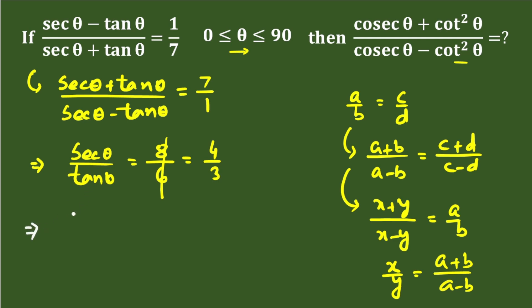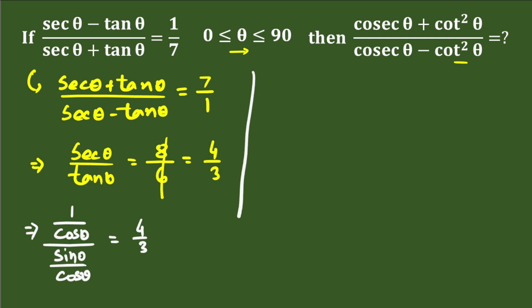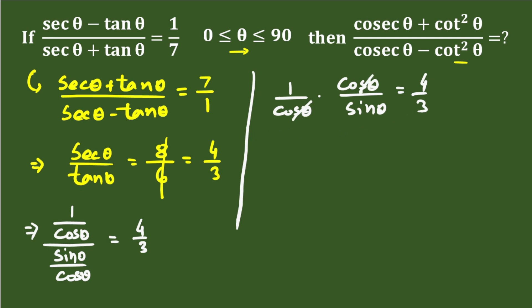Now the value of sec θ divided by tan θ equals 4 by 3. We can write sec θ as 1 divided by cos θ, and tan θ as sin θ divided by cos θ. So the expression becomes (1/cos θ) divided by (sin θ/cos θ), which simplifies — cos θ cancels — leaving 1 divided by sin θ, which is cosec θ. Therefore cosec θ equals 4 divided by 3.